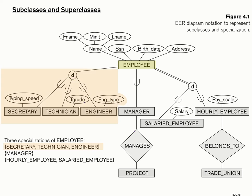If an employee could have more than one of these roles, you would have to change that circle from a D to an O. The O stands for overlapping — we'll see an example of that coming up. The circle exists because we need to understand the relationship between the subclasses: specifically, could an individual be a member of more than one subclass simultaneously or not?